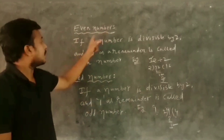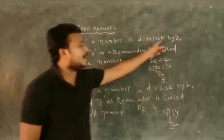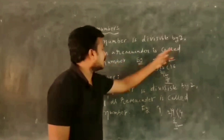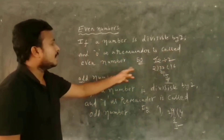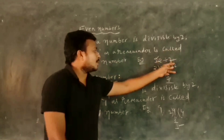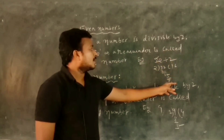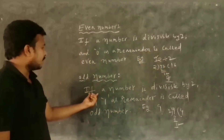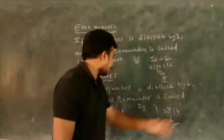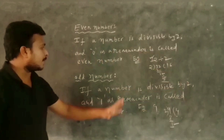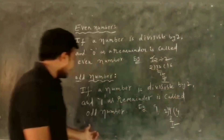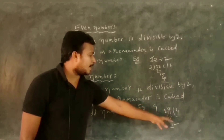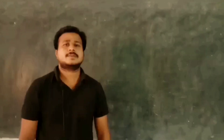Once again: even numbers — if a number is divisible by 2 and remainder is 0 it is called an even number. 32 divided by 2, remainder 0, so 32 is an even number. If a number is divided by 2 and remainder is 1 it is called an odd number. Example 9: divide 9 by 2, remainder 1, so 9 is an odd number.